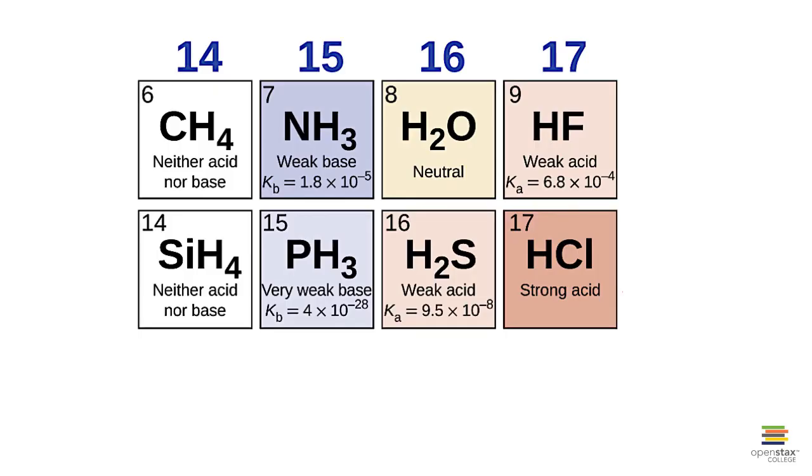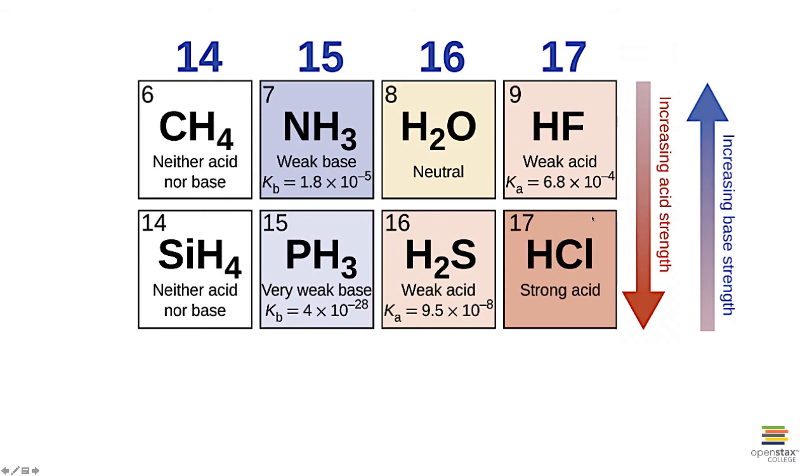And as sort of a general trend, if we have hydrogen directly attached to another element, fluorine, oxygen, nitrogen, carbon, silicon, phosphorus, sulfur, chlorine, then the general trend is what we just saw. As the bond strength gets weaker, for example, going down the column, then the acid strength gets larger. And of course, if the acid is stronger, then the conjugate base is weaker and vice versa.